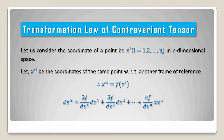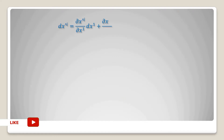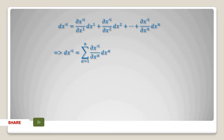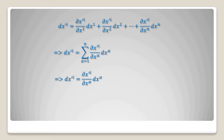So this can be written as dx prime i is equal to del f by del x1 into dx1 plus del f by del x2 into dx2, plus dot dot dot, del f by del xn into dxn. Now dx prime i equals del x prime i divided by del x1 into dx1, plus del x prime i by del x2 into dx2, plus dot dot dot, del x prime i divided by del xn into dxn.